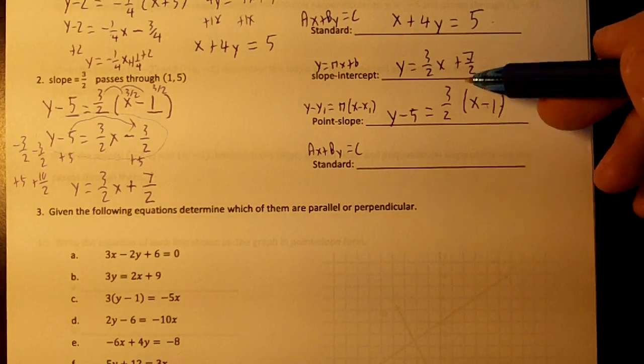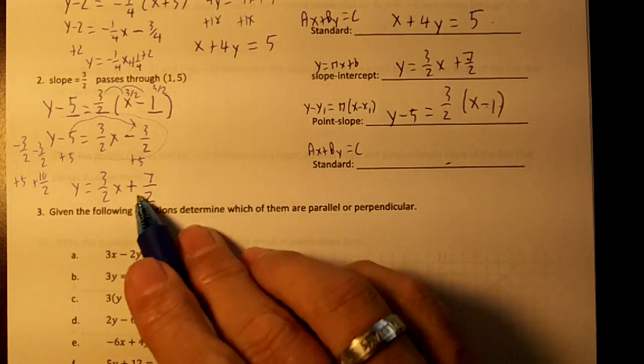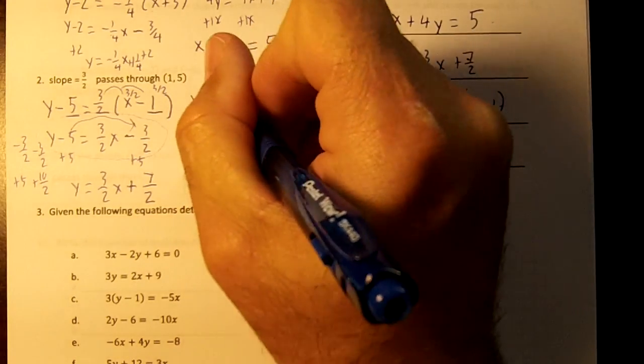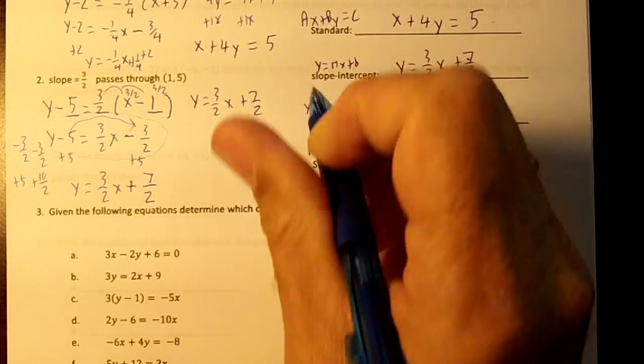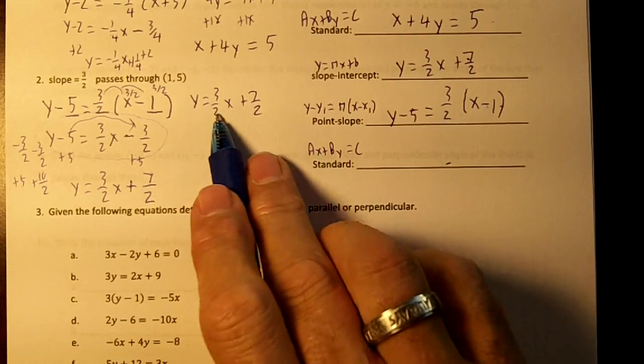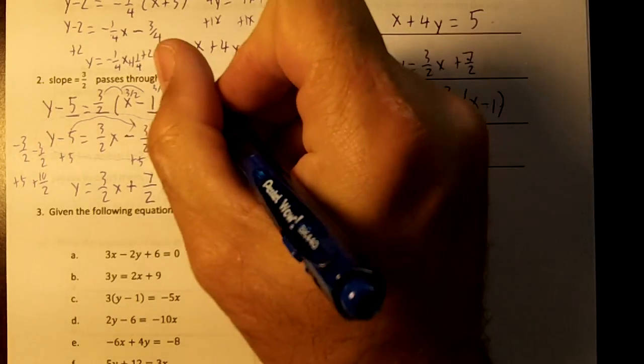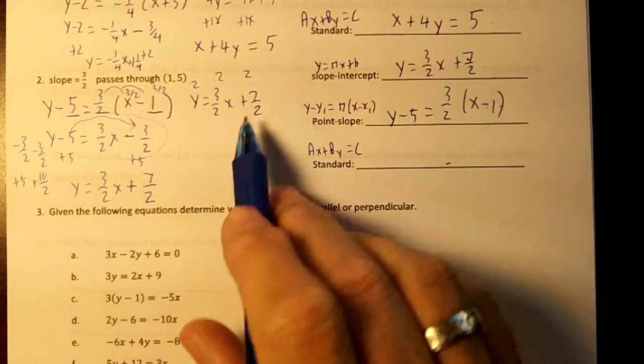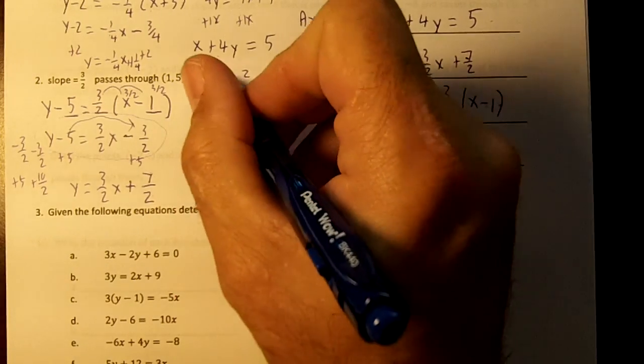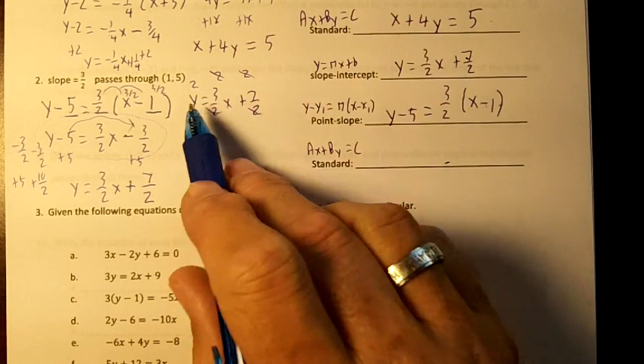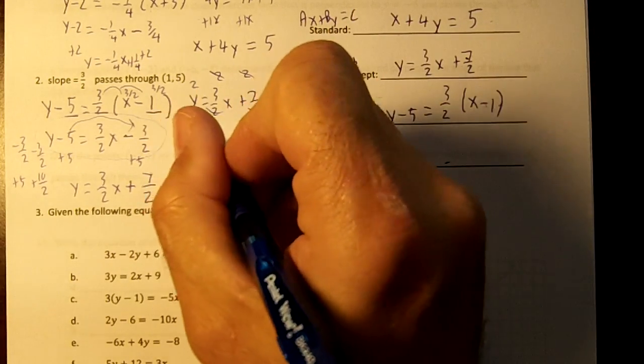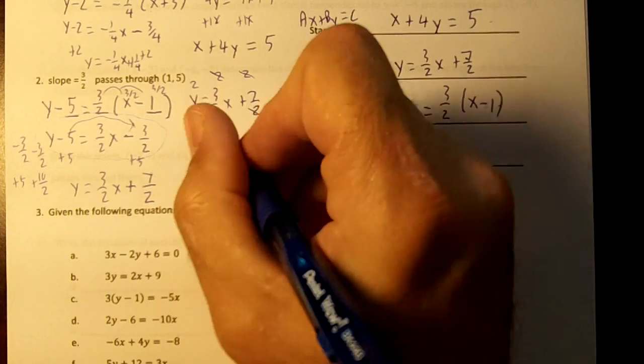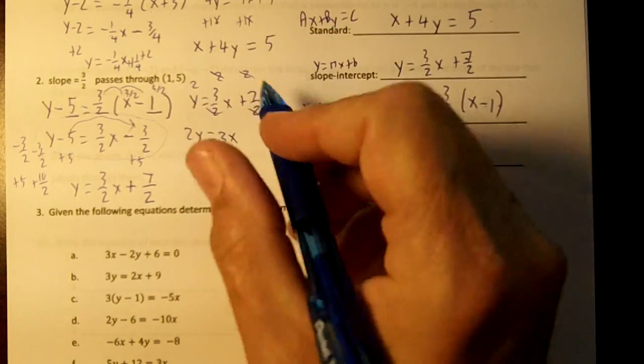Now we've got to go from here to standard. So I'm going to rewrite my slope-intercept form. Standard form cannot have a fraction, so we need to get rid of the 2s. So we're going to distribute the 2s. The option to divide is to multiply. Cancel out the 2s. 2 times y is 2y equals 3x plus 7.